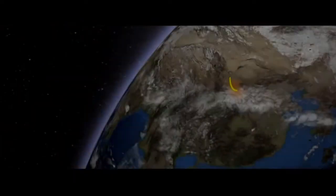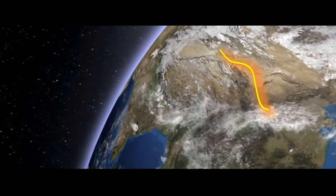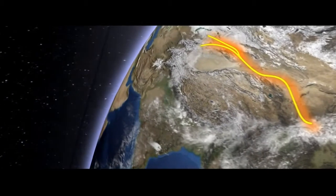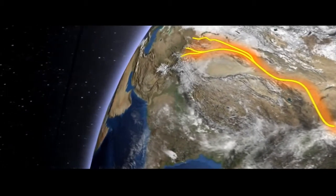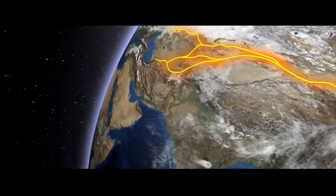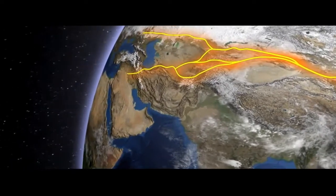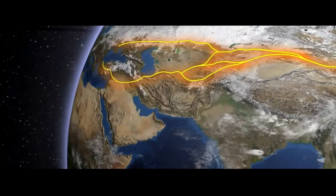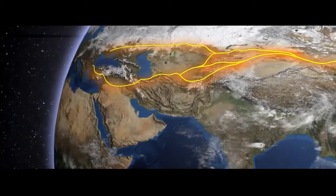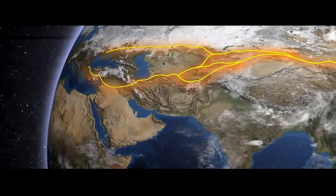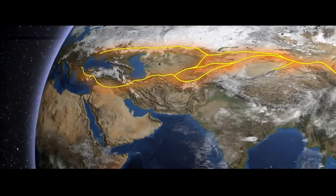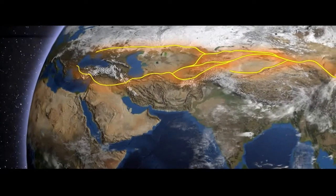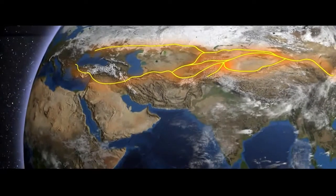The road was laid in the 2nd century BC and ran from Xi'an through Lanzhou to Dunhuang, where it divided into two. The northern road passed through Turpan, then crossed the Pamir and went to Fergana and the Kazakh steppes. The southern one passed through Lake Lop Nor on the northern edge of the Taklamakan Desert through Yarkand and Pamir.